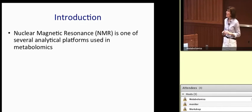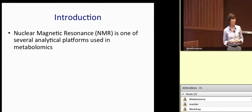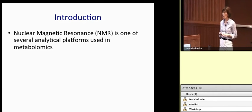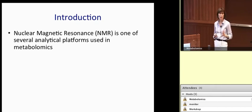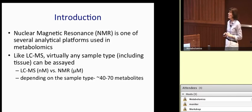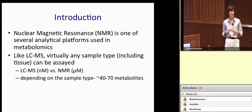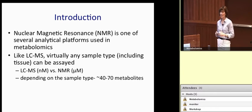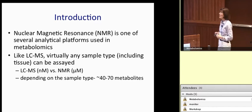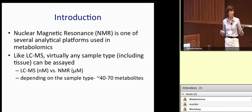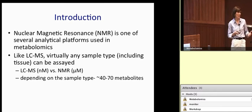NMR is one of the several analytical platforms that can be used for metabolomics, as you've heard throughout the last few days. Like LC-MS, it is applicable to virtually any type of sample — blood, urine, cerebral spinal fluid, broncholavage fluid — any type of biofluid that you can assay by LC-MS, you can certainly also assay by NMR.